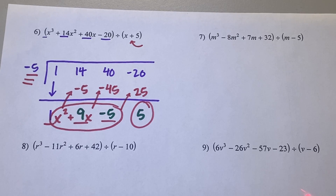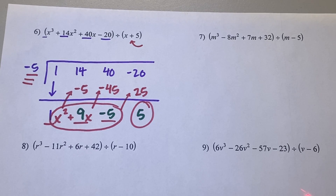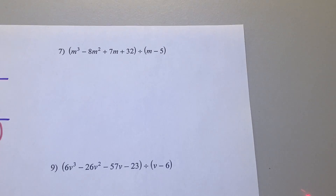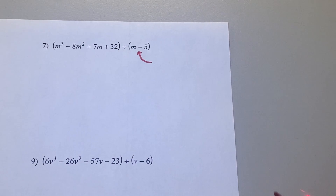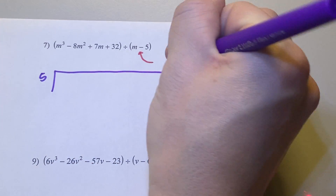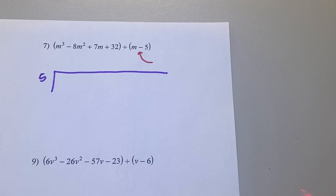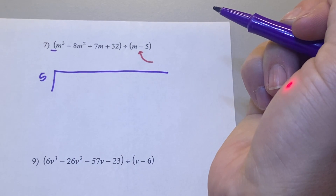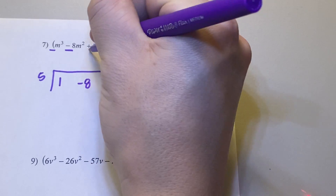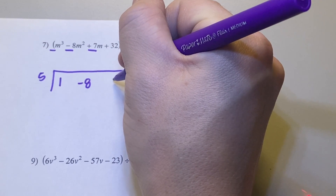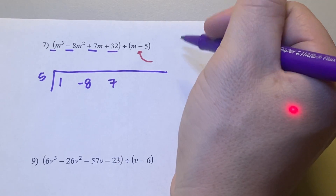Let's try it two more times. Are we starting to see how the pattern works? Show me a fist of 5 — be honest. I'm starting to see the pattern. Let's try number 7. First step: change the sign on this guy. Changes from a negative 5 to positive 5 on the outside. Now I'm just using my coefficients. What's my coefficient on m cubed? 1. Next coefficient? Negative 8. Next? 7. And my last number? 32.